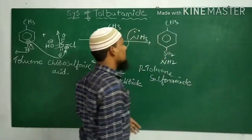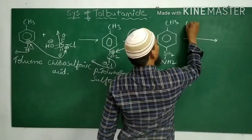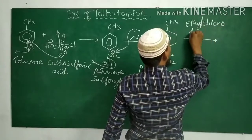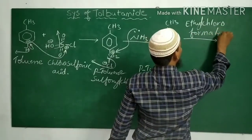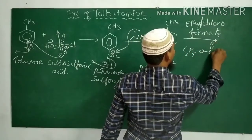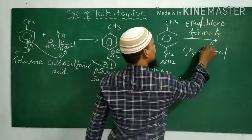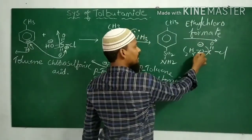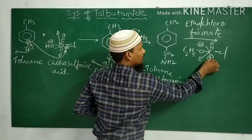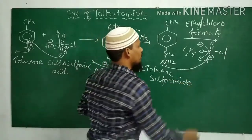Para-toluene sulfonamide is now treated with ethyl chloroformate. Compared to chlorine, the ethoxy group is a good leaving group. It is eliminated as C2H5O minus, giving a COCl+ species. This carbocation is electron-deficient, and the nitrogen donates its lone pair to the carbon, forming the resultant molecule.